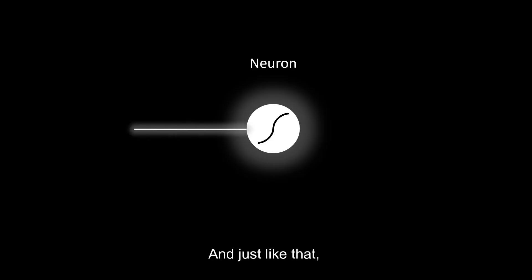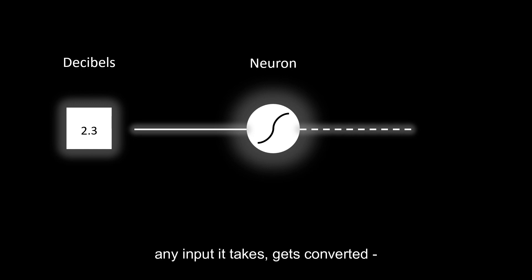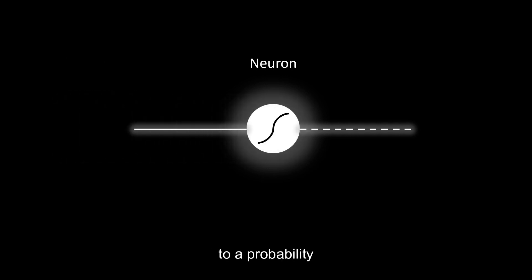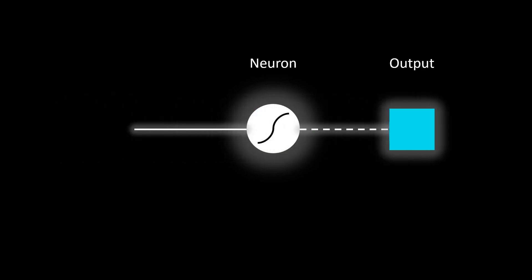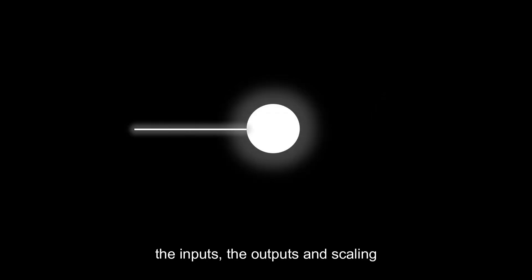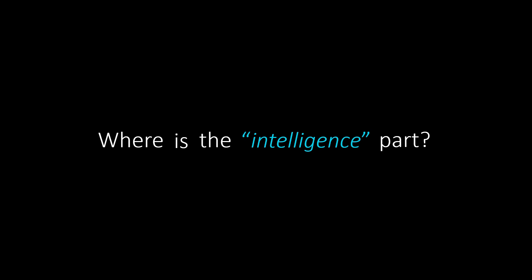So let us upload a sigmoid curve to our neuron. And just like that, any input it takes gets converted to a probability. Great! So far, we've discussed the inputs, the outputs, and the scaling. But you are probably still wondering, where is the intelligence part?